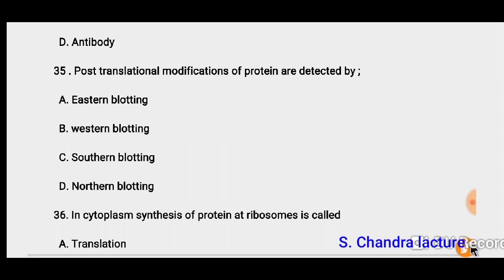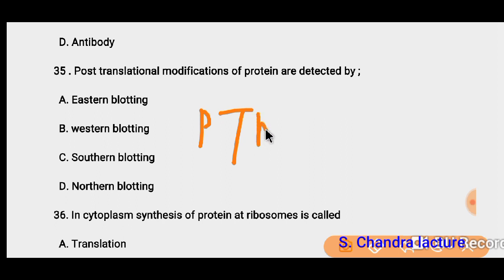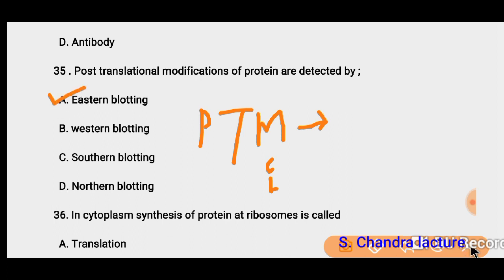Question 35: Post-translational modifications (PTM) — proteins are detected by. PTM means that after a protein is completely formed, some modifications occur in it. Some proteins have carbohydrates attached, some have lipids attached, some have glycolipid moieties attached. Such a protein is called a post-translationally modified protein. Western blotting is used to detect PTM proteins.